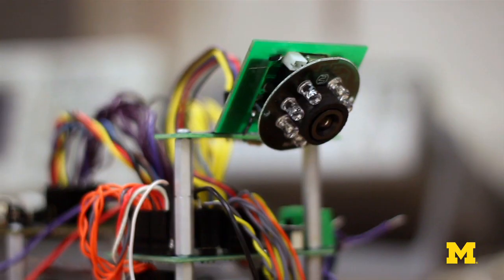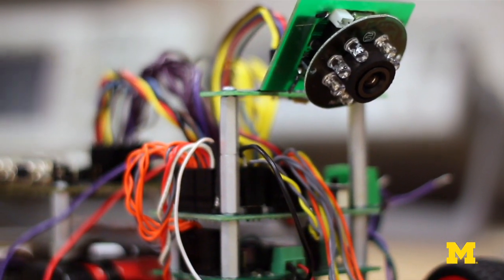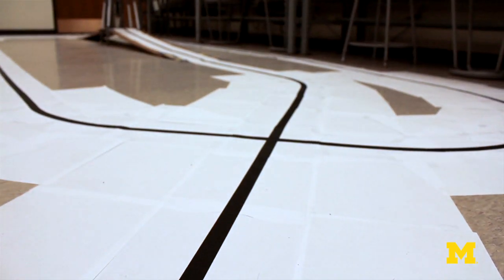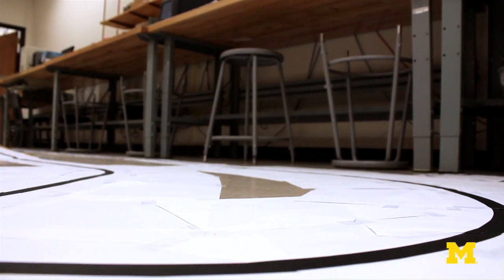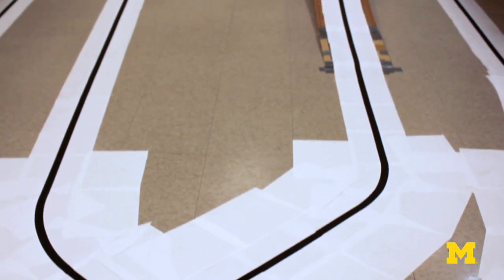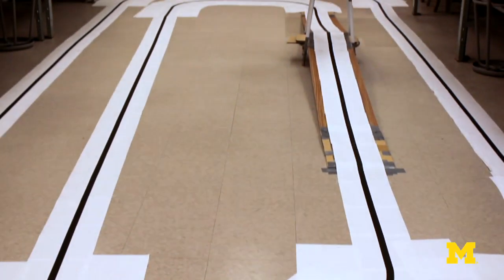The whole premise is you design a car, a little RC car, so that it can race autonomously around a track. They specify the track. In our case it was a one-inch black line with one foot of white space on either side and the objective is to stay on the track and get around as fast as possible without any penalties.